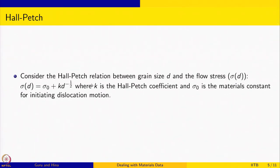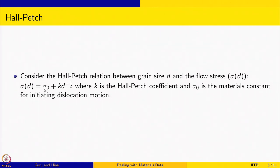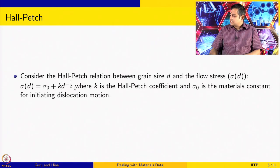Now let us consider the Hall-Petch relation between grain size d and the flow stress σ(d). σ(d) is known to be σ₀ + k·d^(−1/2), where k is the Hall-Petch coefficient. This relationship, assuming it is d to the power minus half, is due to Hall and Petch. The constant you get when fitting to this functional form is the Hall-Petch coefficient, and σ₀ is the material constant for initiating dislocation motion. As you can see, there could be uncertainty in many of these quantities, and obviously the grain size is not a single number — it has uncertainty.